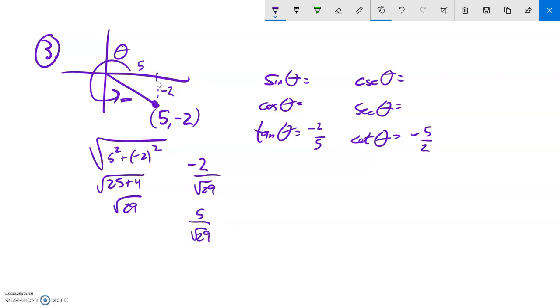Now let me get these just written up here. I'm going to rationalize them, so multiply by root 29 over root 29. Sine's that, cosine is this.